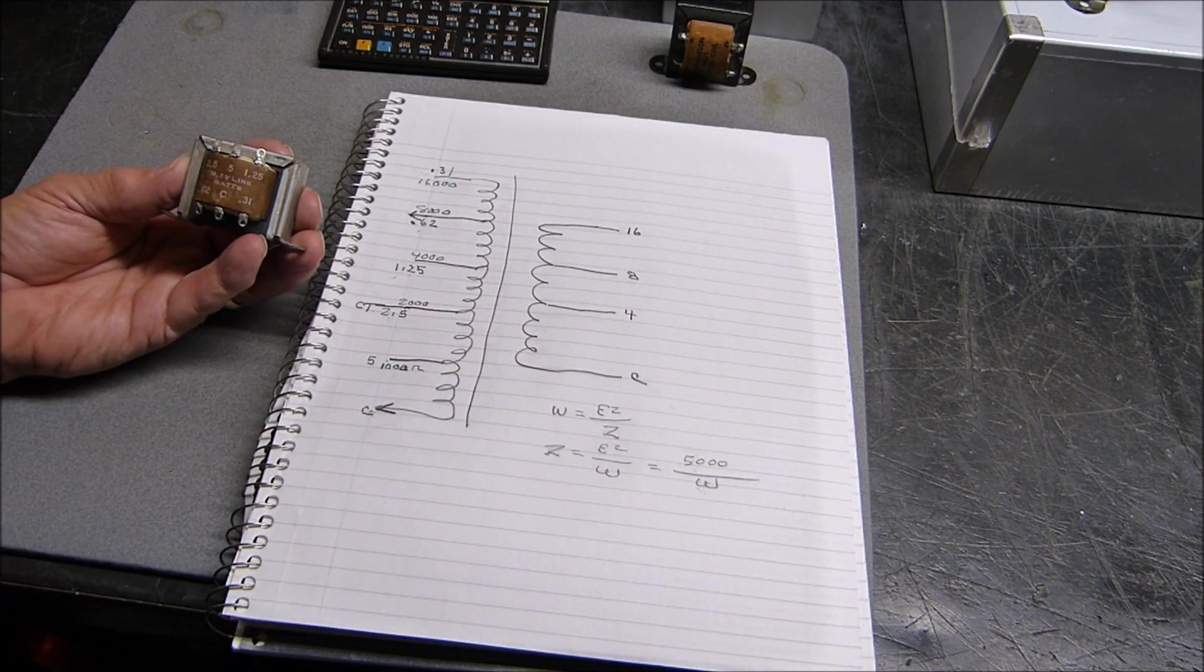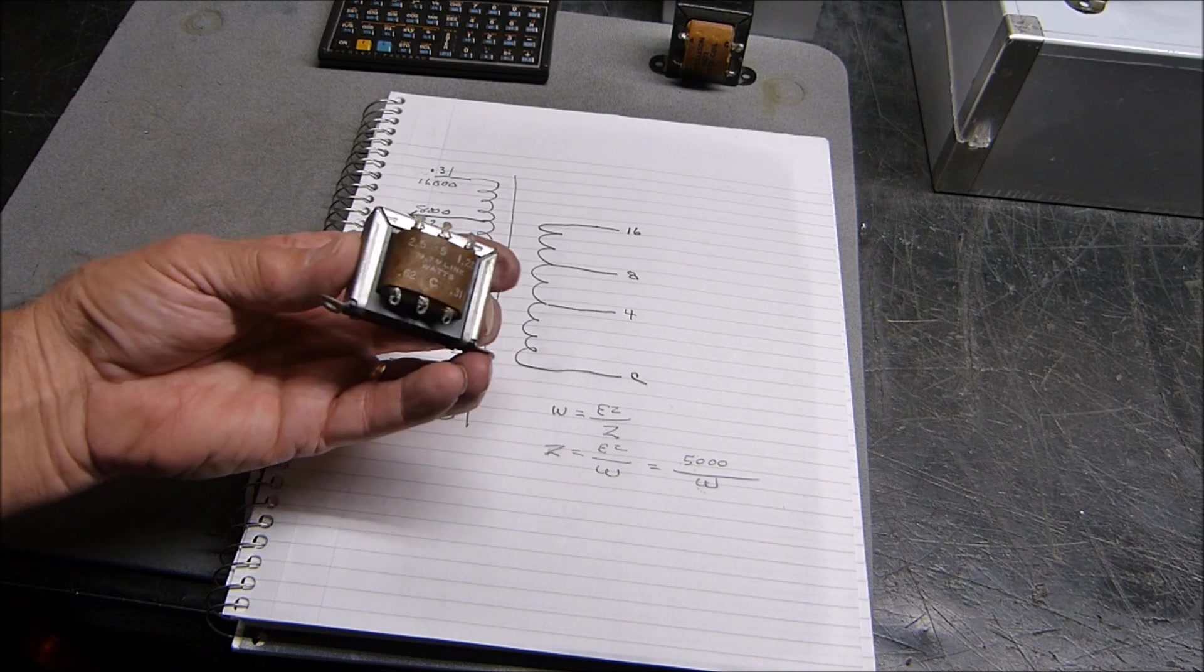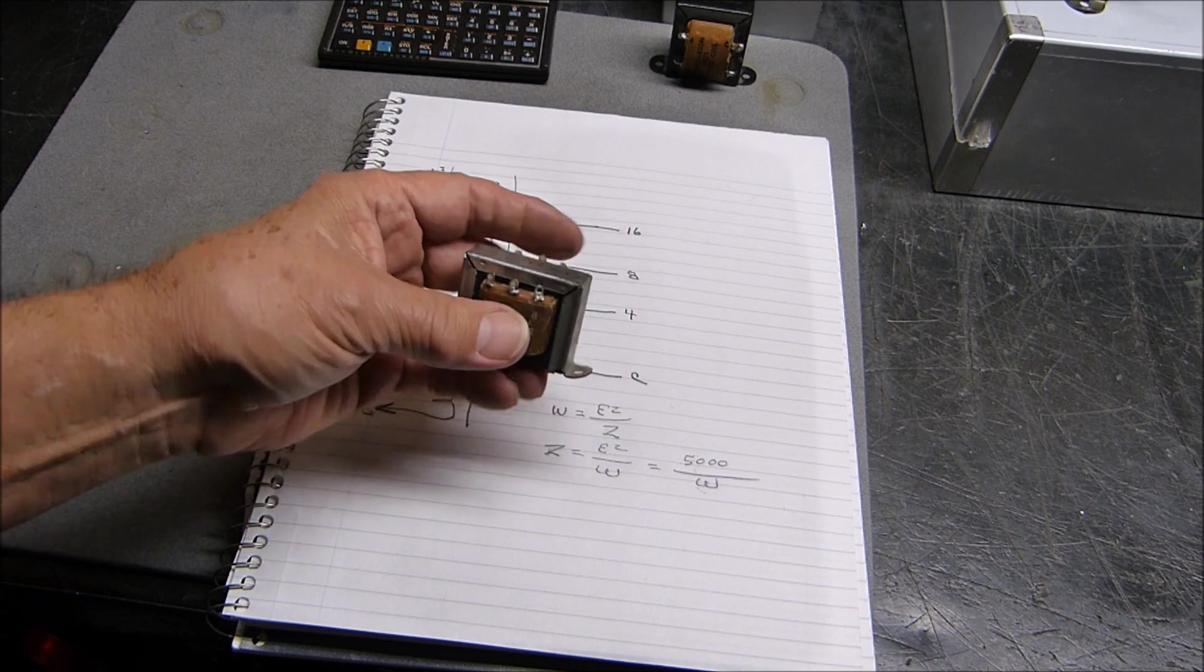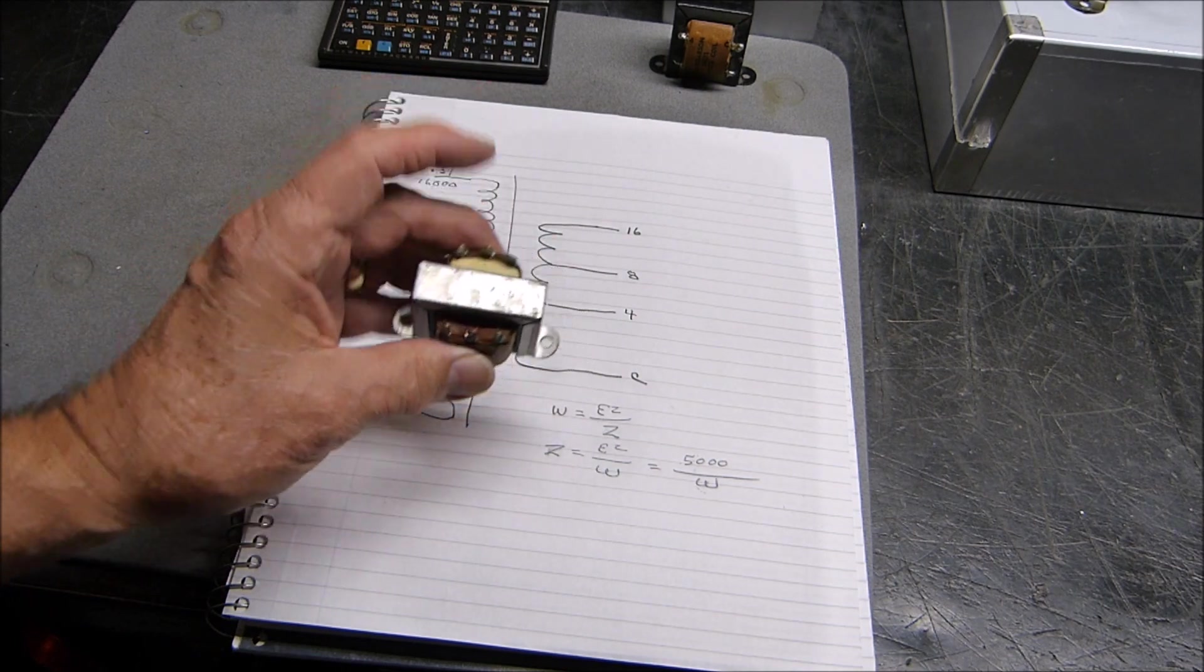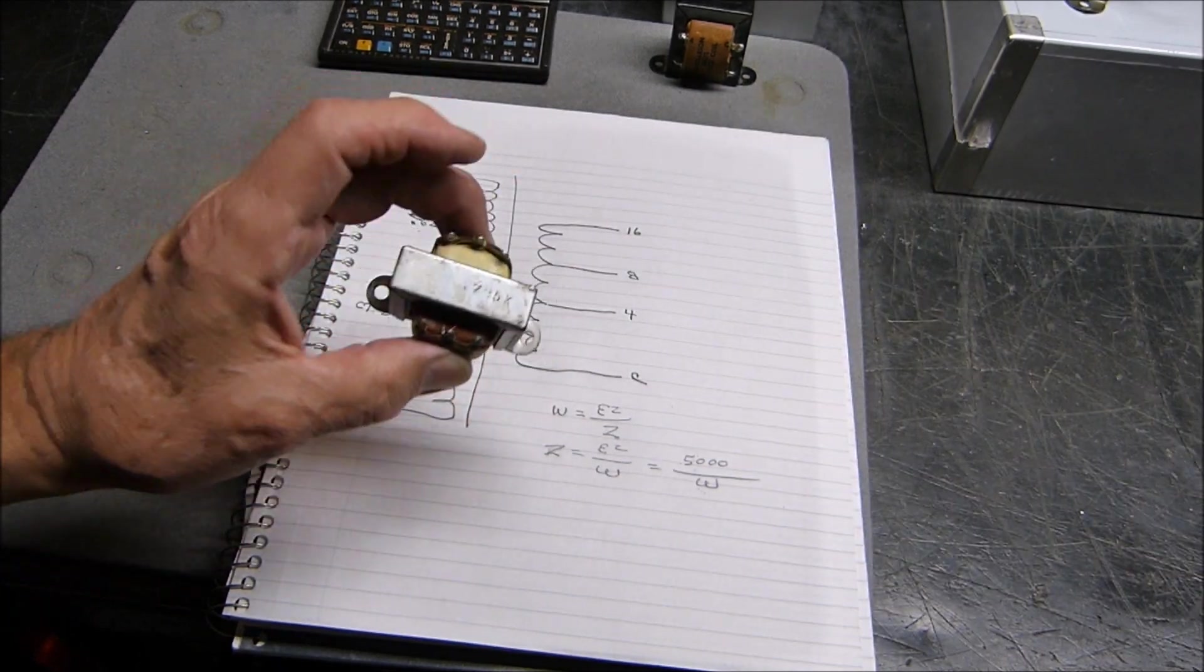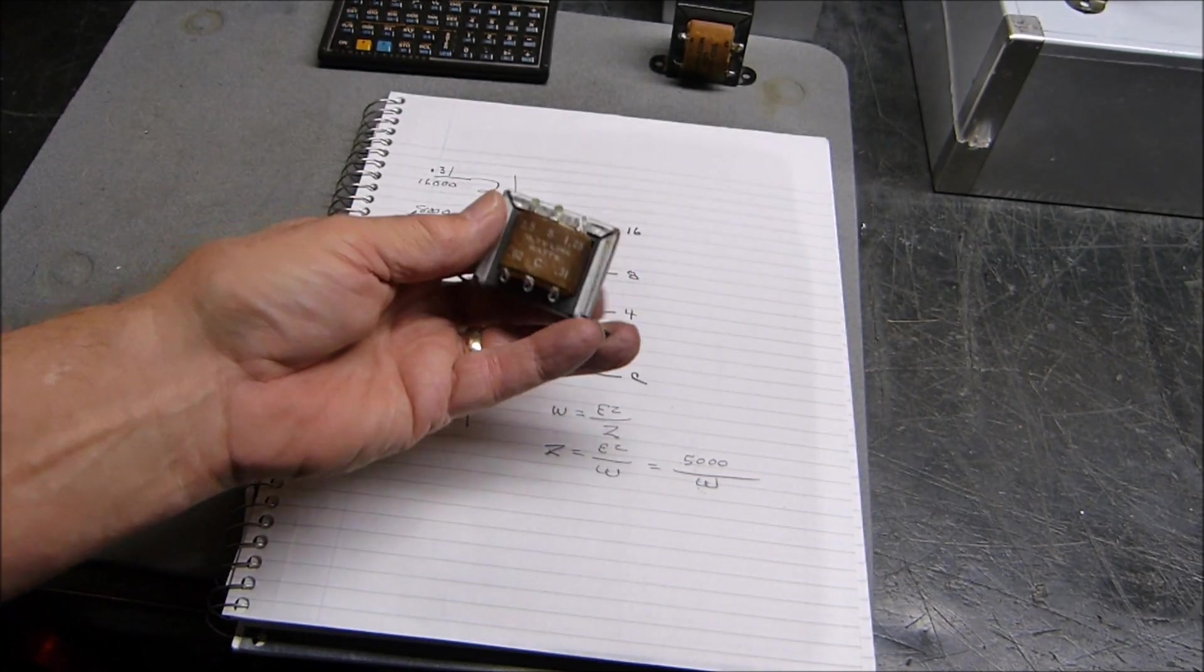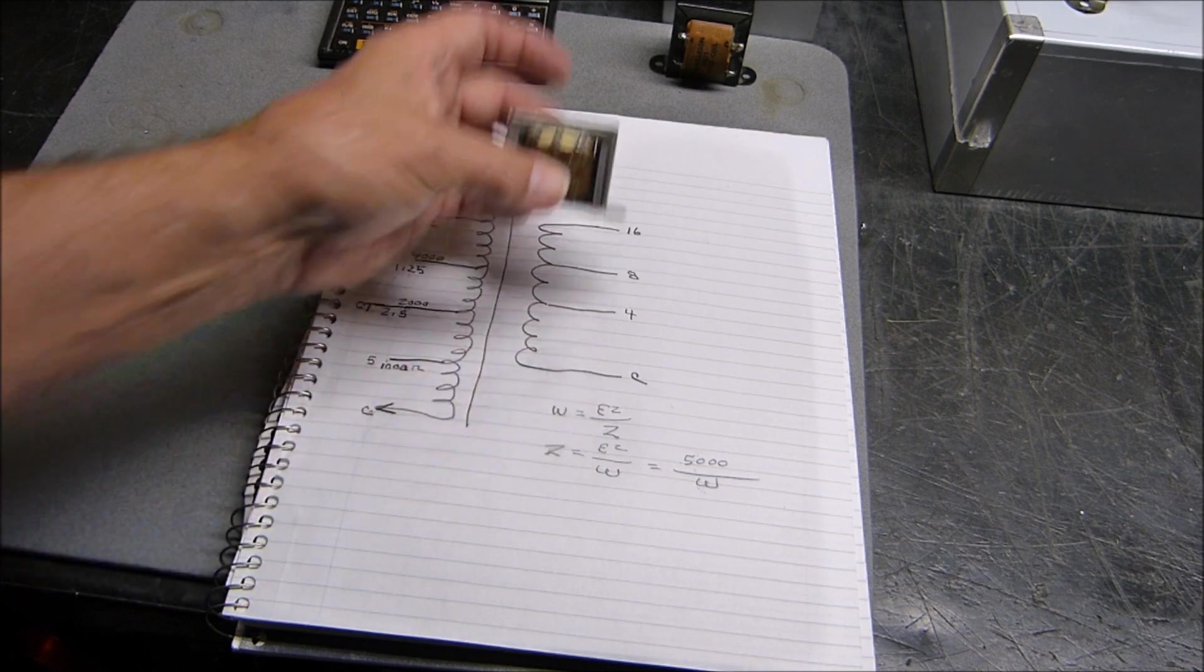Divide 5,000 by 1.25, we get 4,000. Divide 5,000 by 0.62, we get 8,000 ohms, and 10,000 ohms. I'm sure these are little SE type transformers. They probably have an air gap in them so they don't saturate so easily, but that's okay. We can still use them for push-pull.